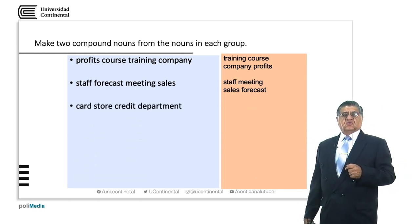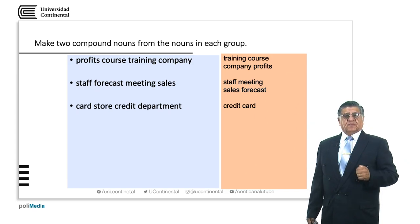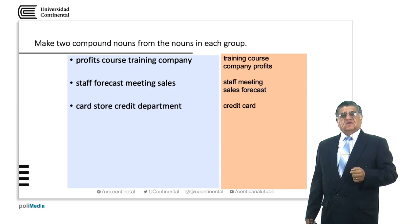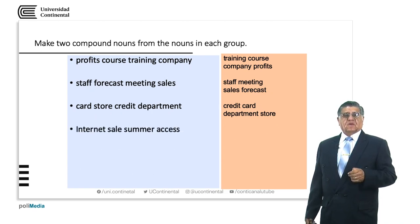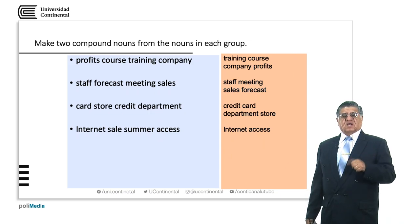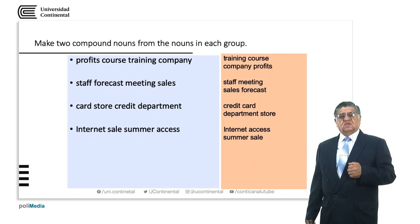Card, store, credit, department: 'credit card' — the plastic we use normally — and 'department store', which is a store organized in departments that sells almost everything. Next: internet, sales, summer, access. 'Internet access' is the access to the internet. 'Summer sale' — it's a sale in summer with offers and many things.